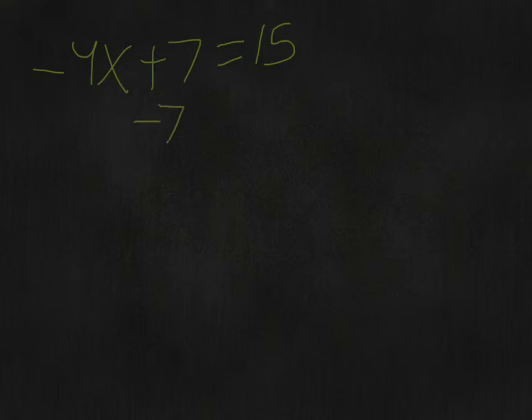So again, we want to isolate the x, so we subtract 7, which leaves us with -4x = 15 - 7, which is 8.